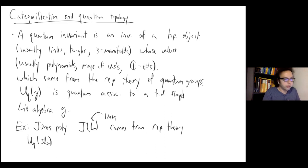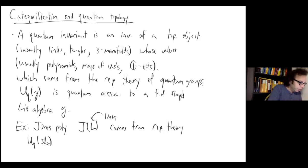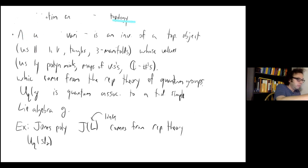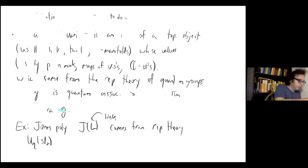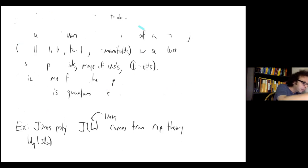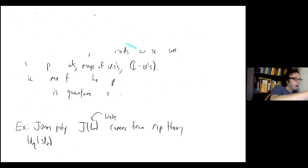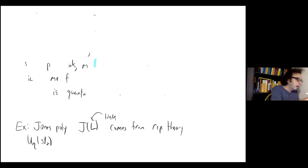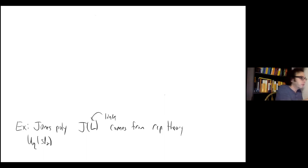SL2 is just the Lie algebra of two-by-two matrices whose trace is zero — one of the most basic Lie algebras. It's interesting that you already get non-trivial things from this very basic Lie algebra and its quantum group. Now in the next section I'll briefly touch on categorification and come back to it later in the talk.